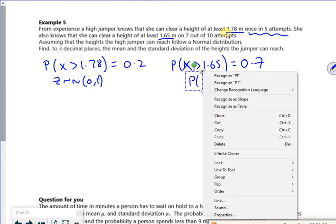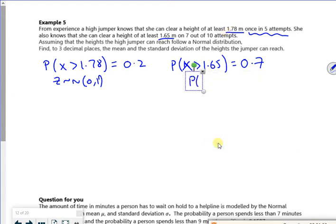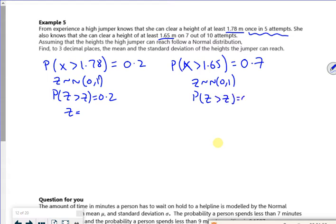Well that's fine. So I've got the probability that Z is greater than z is 0.2 and I want the Z value for it. And I want the probability that Z is greater than z is 0.7 and I want a Z value for it.